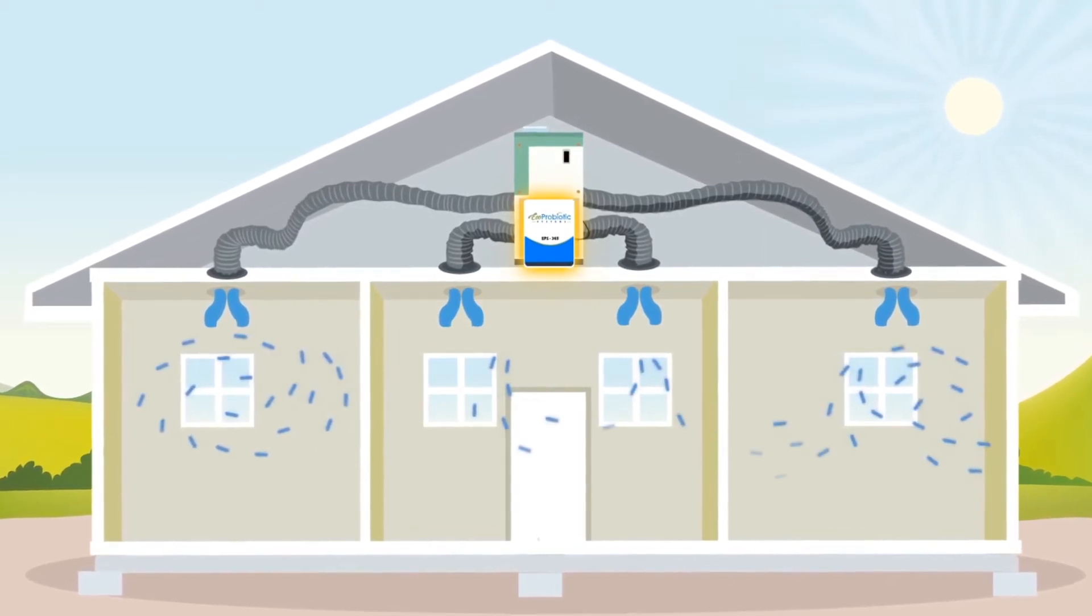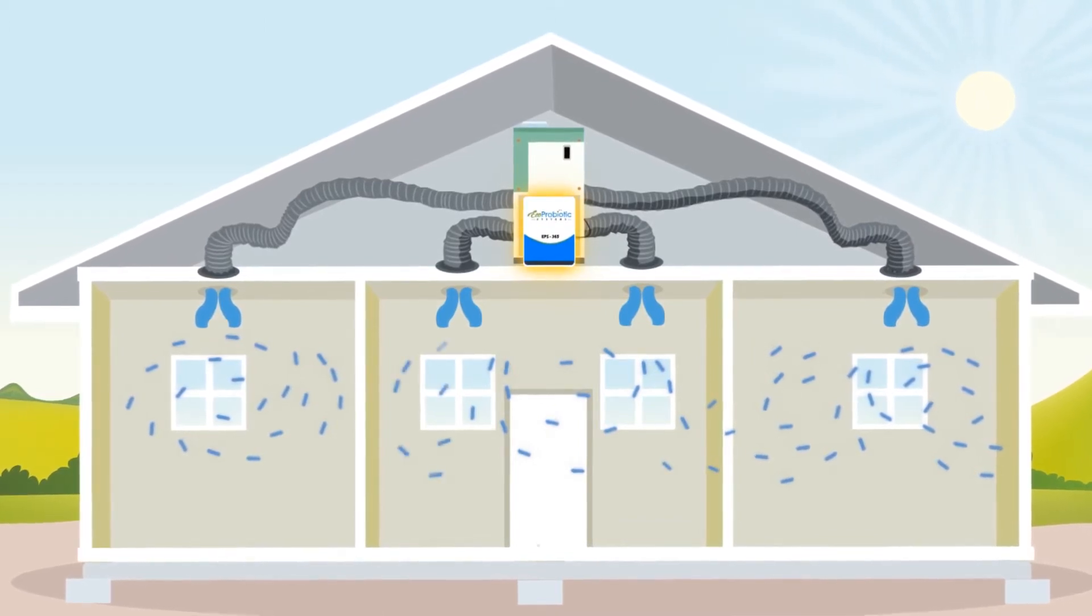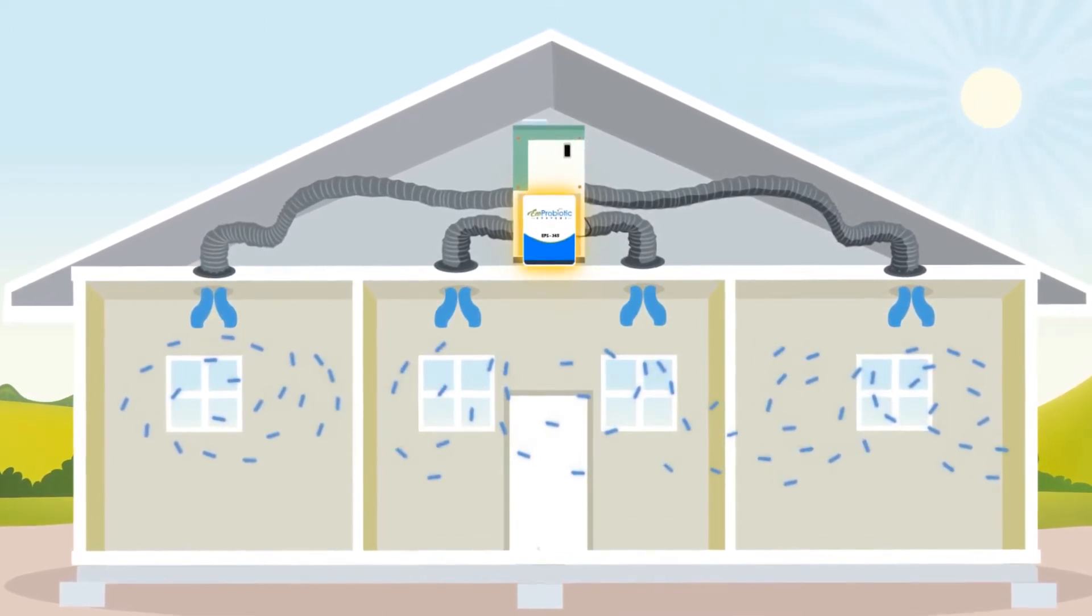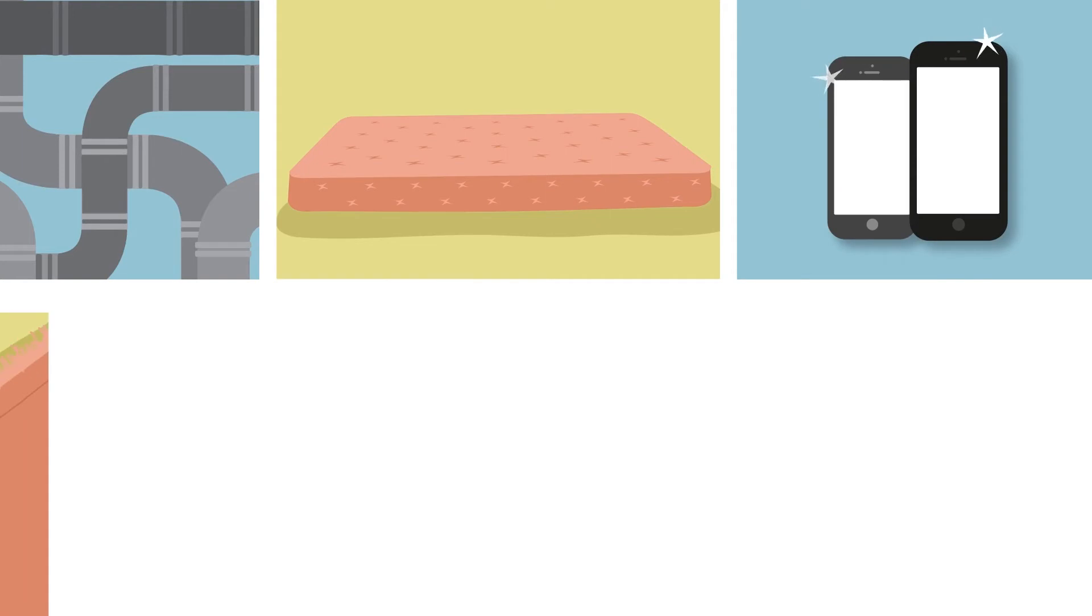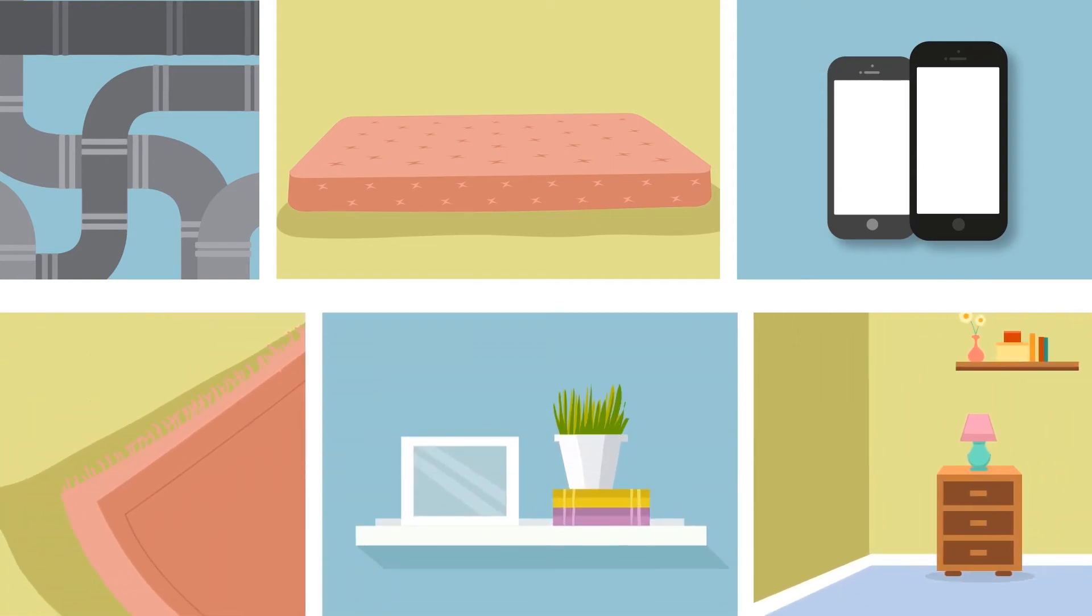Our machine distributes specialized probiotics through your home's HVAC system, releasing many trillions of beneficial probiotic reinforcements daily, which can penetrate and clean inside air ducts, mattresses, cell phones, underneath carpets, covering all air, objects, and surfaces in your home.